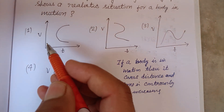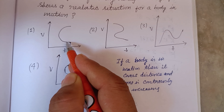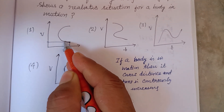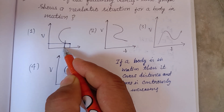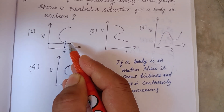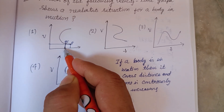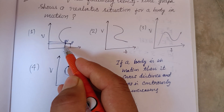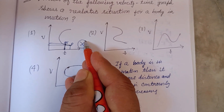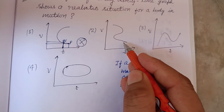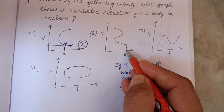In the first graph, if the particle starts here, we check the time and distance at various points. At point Q, time is decreasing while distance is increasing — but time decreasing is not a condition of motion, so this graph is not realistic.